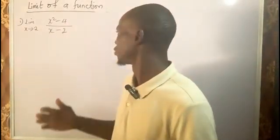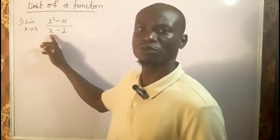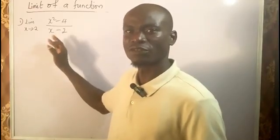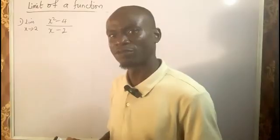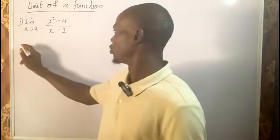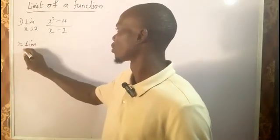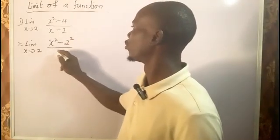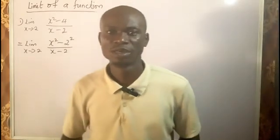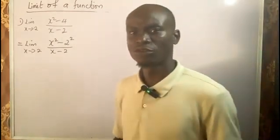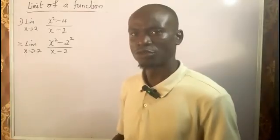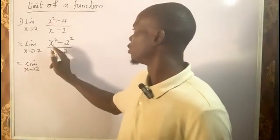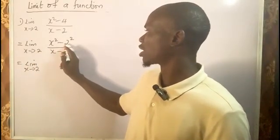Let's look at some other examples. For this limit to have a solution, we need to simplify it. Checking the denominator — if I substitute 2, I get 2 minus 2 which is zero, so it's undefined. Observing the expression, we notice we can apply the difference of two squares at the top, since 4 is a perfect square. This can be written as limit as x tends to 2 of (x² minus 2²) all over (x minus 2).